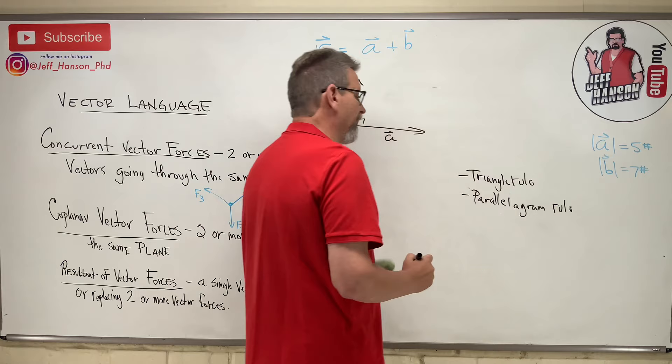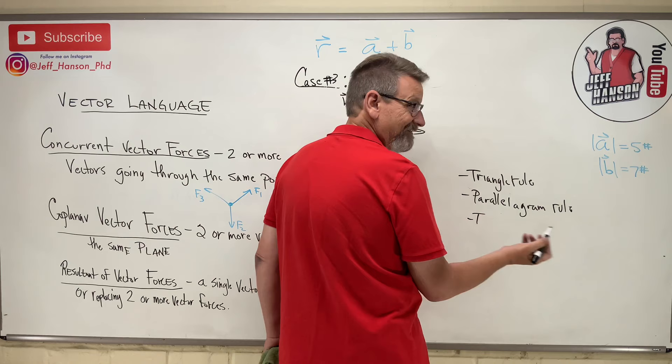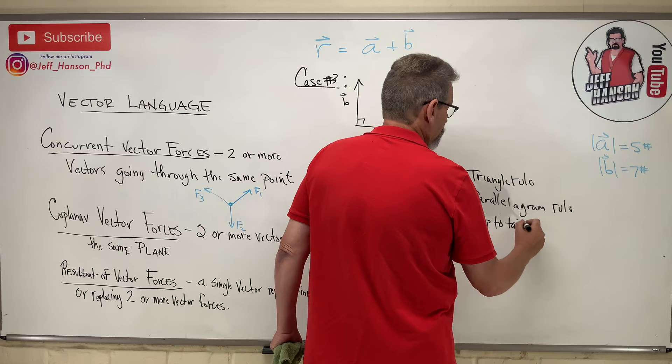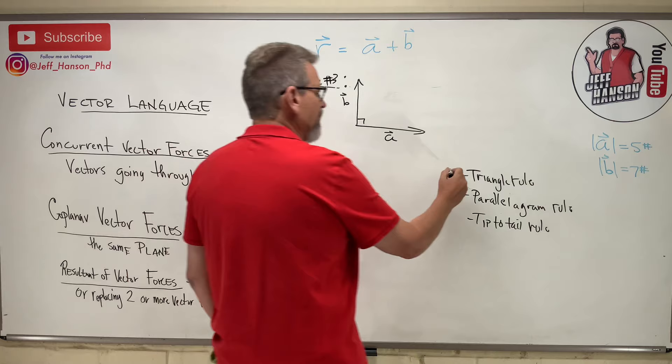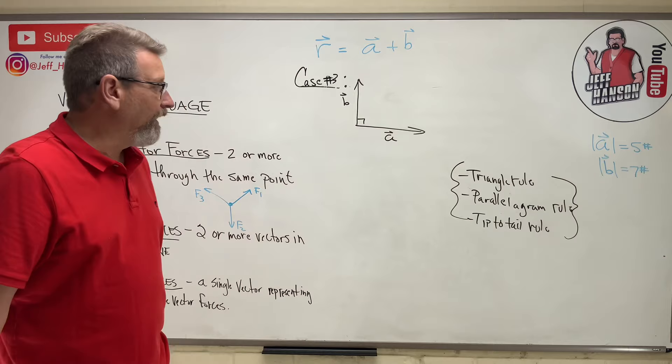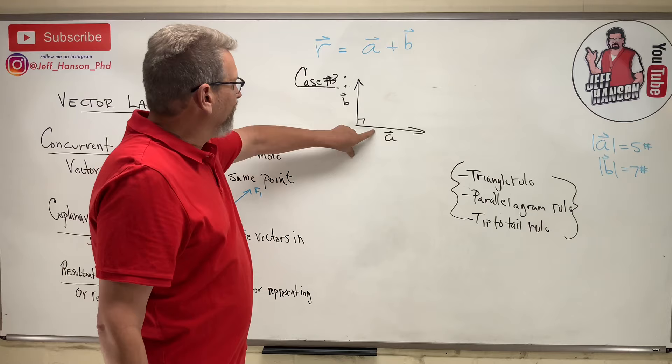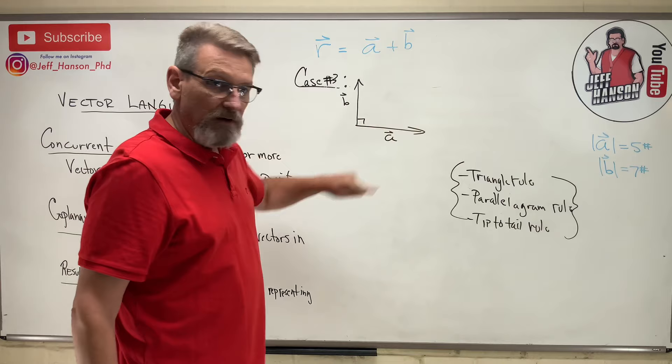Oh my goodness, my brain just quit working right there. Or you may hear it called, probably this is the one you remember, the tip to tail rule. They're all the same thing, and no matter what you hear, those three things there, all the same thing. So, no matter how you hear it, they all do the same thing. They said, it says this, take one vector, and then take the second vector, and move his tail to the tip of the first vector.